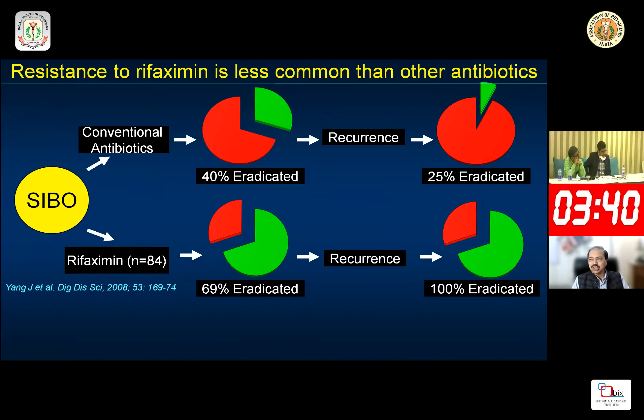If a SIBO patient has MMC abnormalities, stimulating the MMC with prokinetic drugs can prevent recurrence. This was shown in a study by Mark Pimentel where, after successful eradication, patients given a prokinetic had significantly delayed recurrence compared to those who did not receive one. Another interesting study used pyridostigmine to treat SIBO successfully, further supporting that prokinetics may be effective in preventing SIBO recurrence.